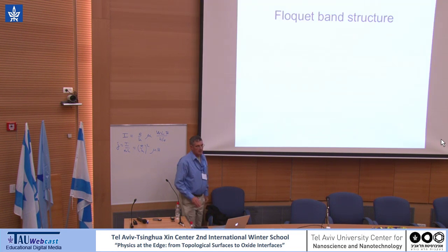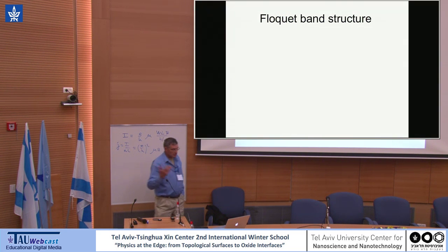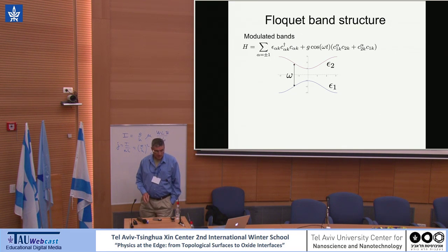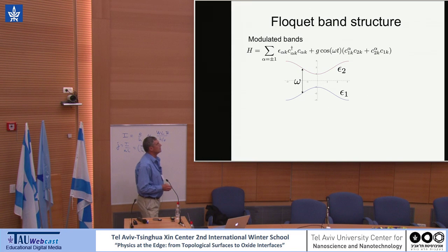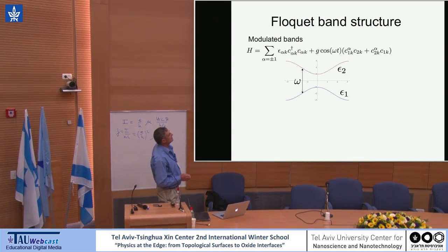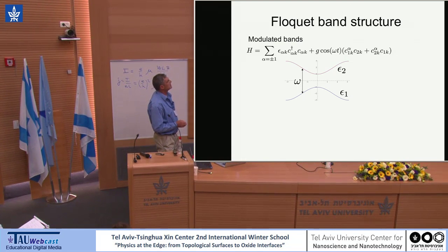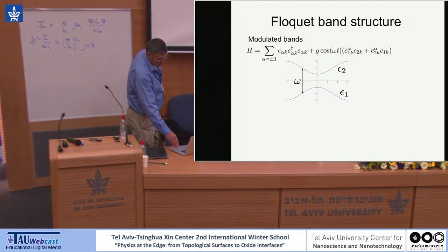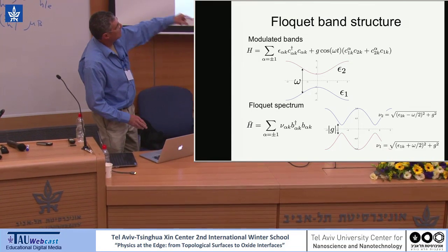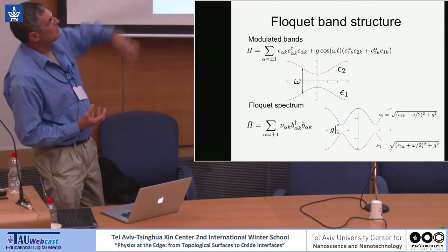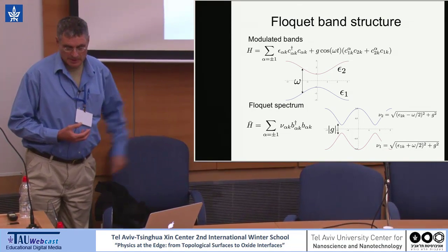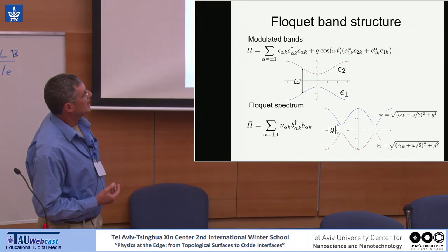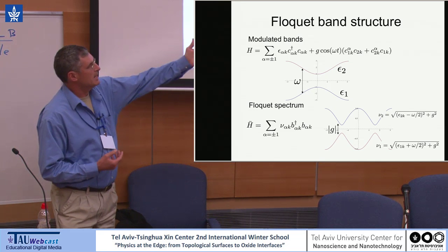When this approach is applied to simple band structure models with non-interacting electrons and a time-dependent perturbation that couples between two different bands, the perturbation will mix the bands. When you solve for the Floquet band structure, you get the colliding of these two bands with a gap that's proportional to the size of the time-dependent perturbation — it's called a Rabi splitting. And the Floquet Hamiltonian is actually this resulting band structure.